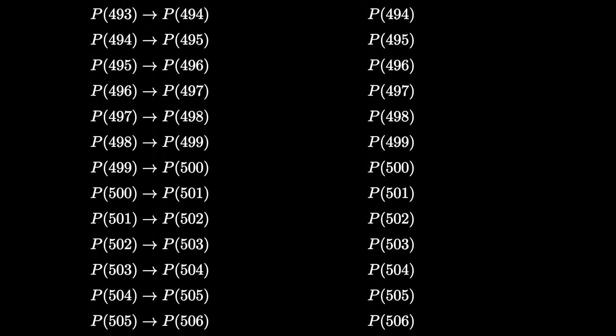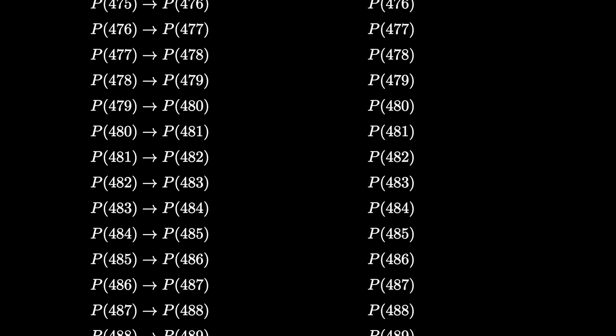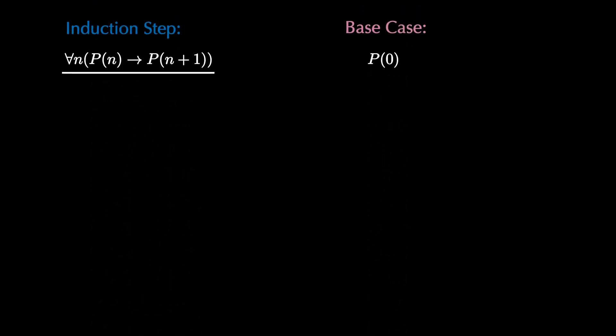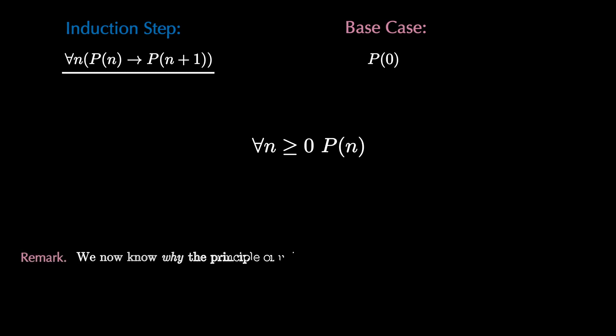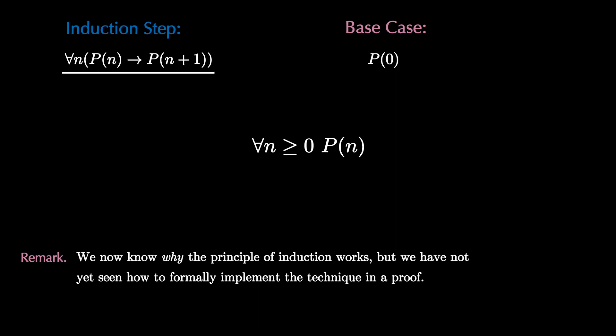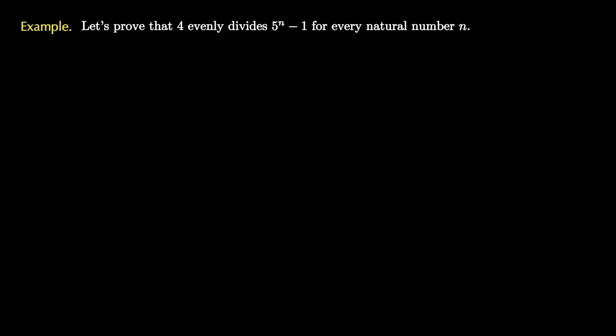You should be able to convince yourself that given any positive integer n, you can use this technique to verify that p of n is true. Therefore, we've used these two steps to prove that for all n greater than or equal to 0, p of n is true. We now know why mathematical induction works, but we have not yet seen how to formally implement the technique in a proof. So let's work through a formal induction proof example, revisiting the claim that 4 evenly divides 5 to the n minus 1 for every natural number n.